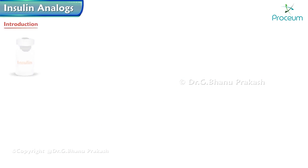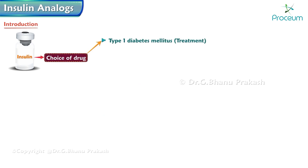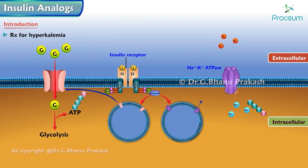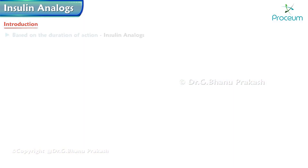Insulin analogs — insulin is used as the drug of choice in treatment of type 1 diabetes mellitus, gestational diabetes mellitus, diabetic ketoacidosis, and in type 2 diabetes mellitus in later stages. It is also used in treatment of hyperkalemia, as it potentiates influx of potassium into the cell along with glucose uptake.